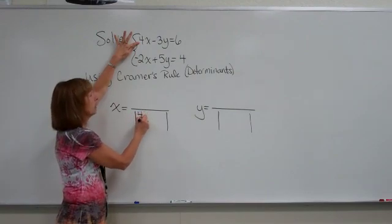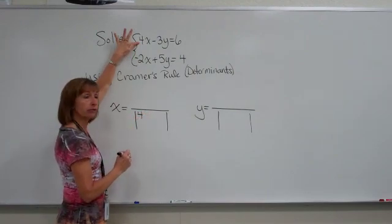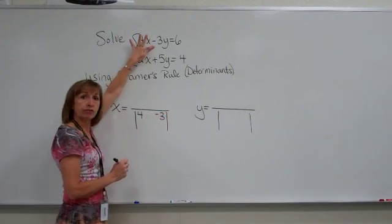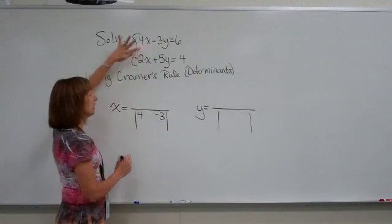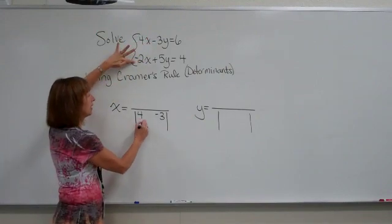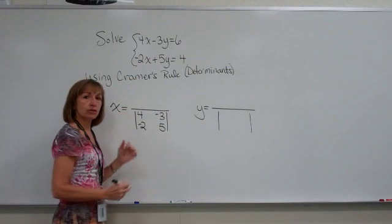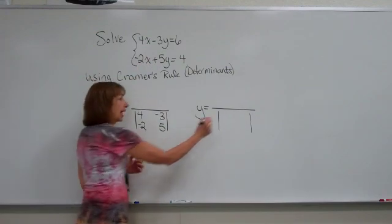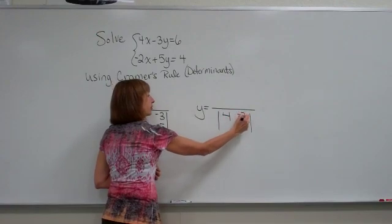So I have a 4 as a coefficient in front of my x in my first equation, then a negative 3 as the coefficient in front of y in my first equation. In the second equation, I have a negative 2 and then a 5. So that's the determinant that I want to find for the denominator for x as well as the denominator for y.